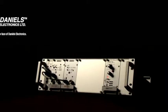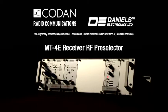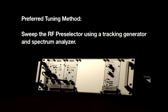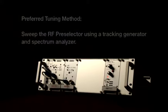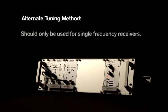This video will describe how to tune the Daniels Electronics MT4E receiver RF preselector. The RF preselector may be tuned several different ways. The preferred method is to sweep the RF preselector using a tracking generator and spectrum analyzer. The alternate method is to tune the RF preselector for best SINAD response. The alternate method should only be used for single frequency receivers.